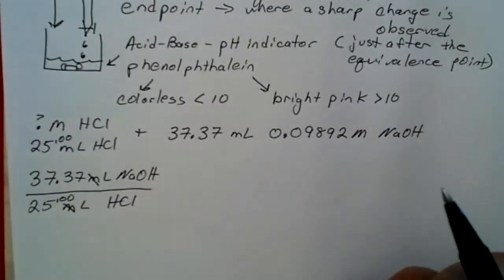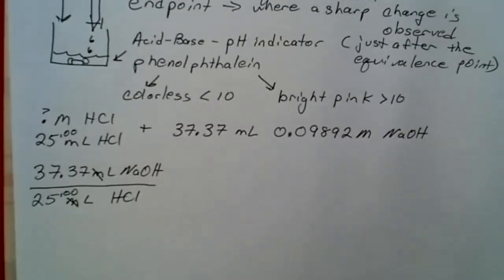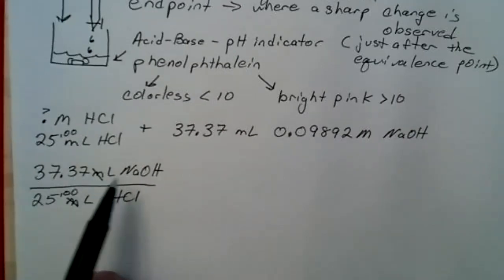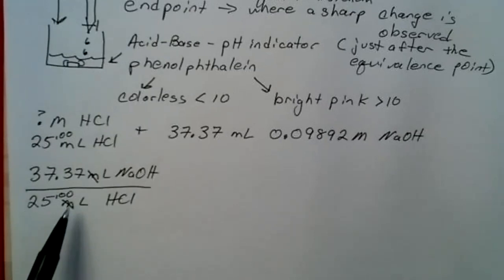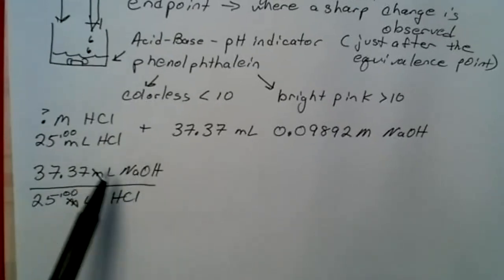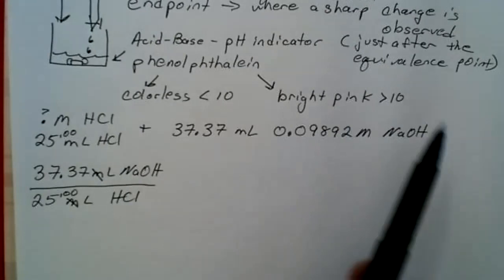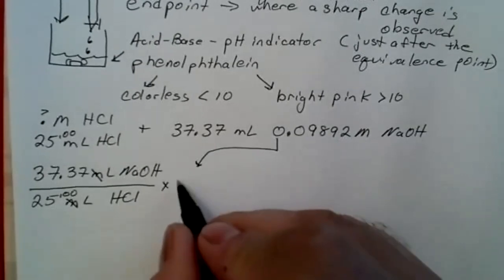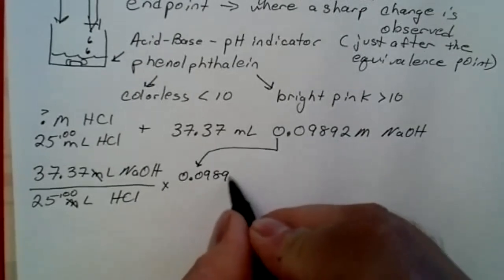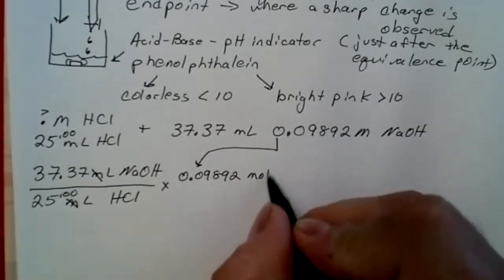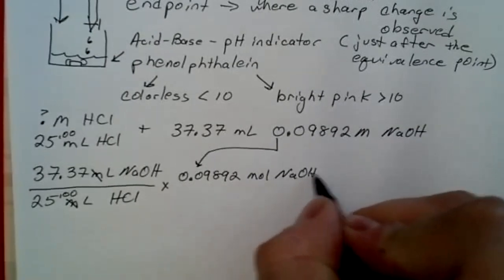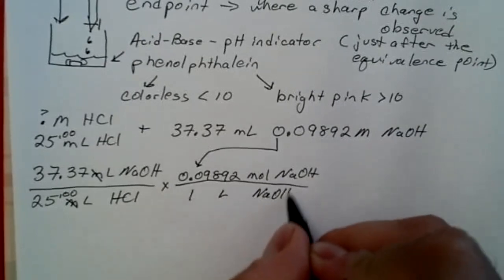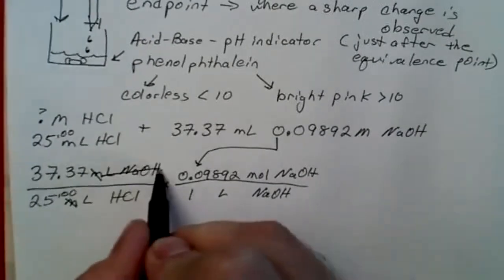Now if I'm pretending that it took me 37.37 liters of sodium hydroxide for 25 liters of HCl, now my liters of sodium hydroxide I can turn into moles. Remember, molarity is simply moles per liter. So I have 0.09892 moles of NaOH for every one liter of NaOH. Now my liters of NaOH cancel.